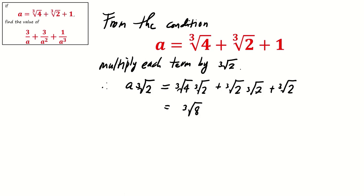For the second term, cube root of 2 times cube root of 2 is actually cube root of 4. The last term is cube root of 2, which cannot be further simplified.